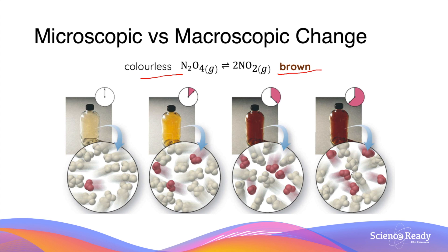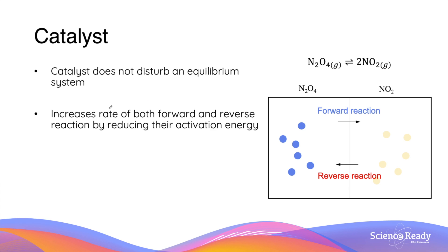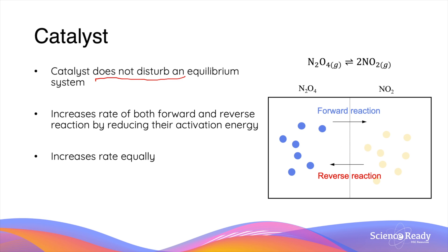The last factor to discuss is a catalyst and its effect on equilibrium. A catalyst does not disturb an equilibrium system. A catalyst increases the rate of both forward and reverse reactions by reducing the activation energy, but crucially it increases the two rates equally. Therefore an equilibrium system remains undisturbed, as the rates of the forward and reverse reactions remain equal.